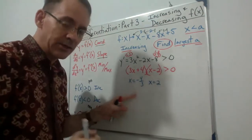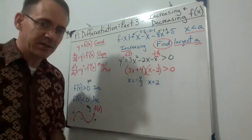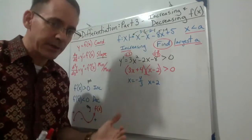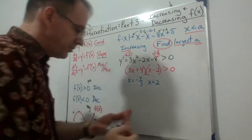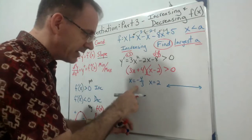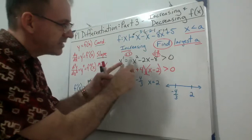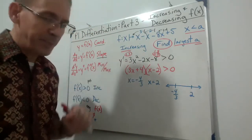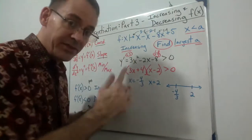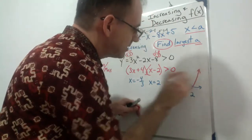Make a little number line and put these numbers in order: −4/3 then 2. Notice that our derivative is a quadratic and the x² coefficient is positive, meaning it faces up. So if you graph this, these are the zeros. The graph goes up, comes down between the zeros, and goes up again. This means the left section (before −4/3) is positive, the middle section is negative, and the right section (after 2) is positive again.